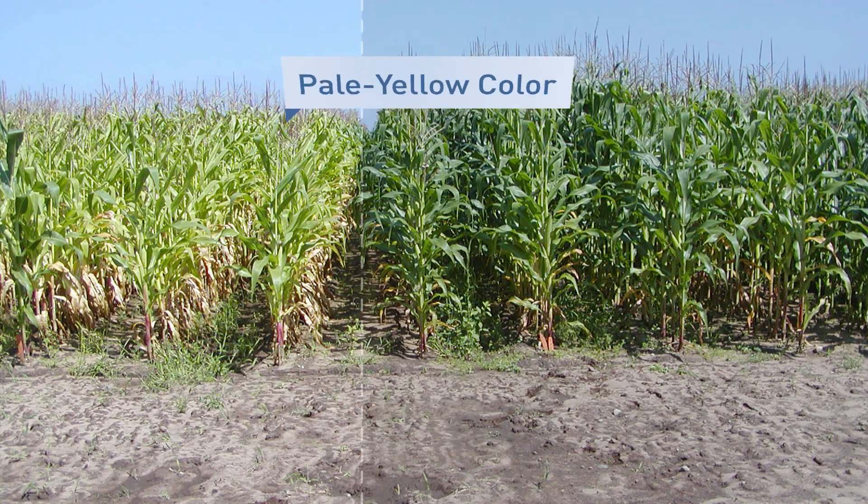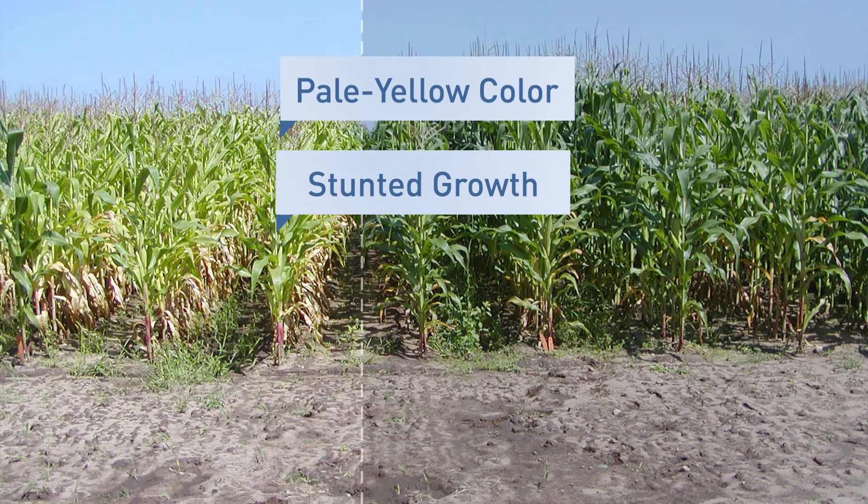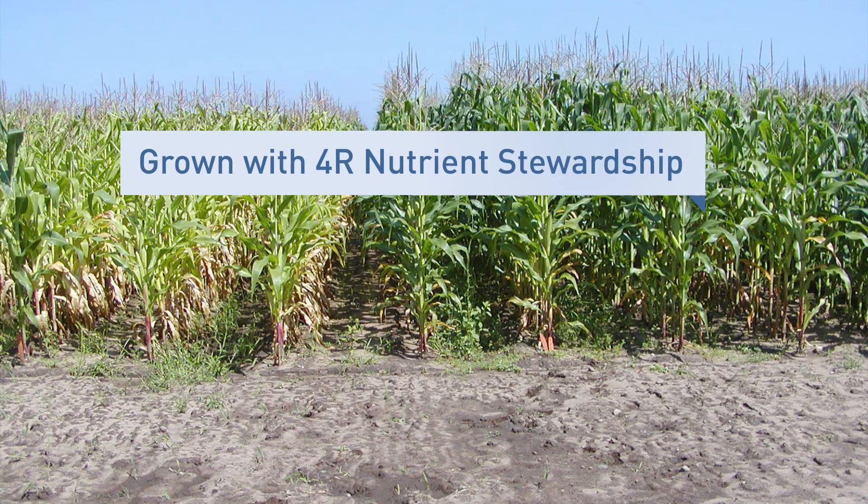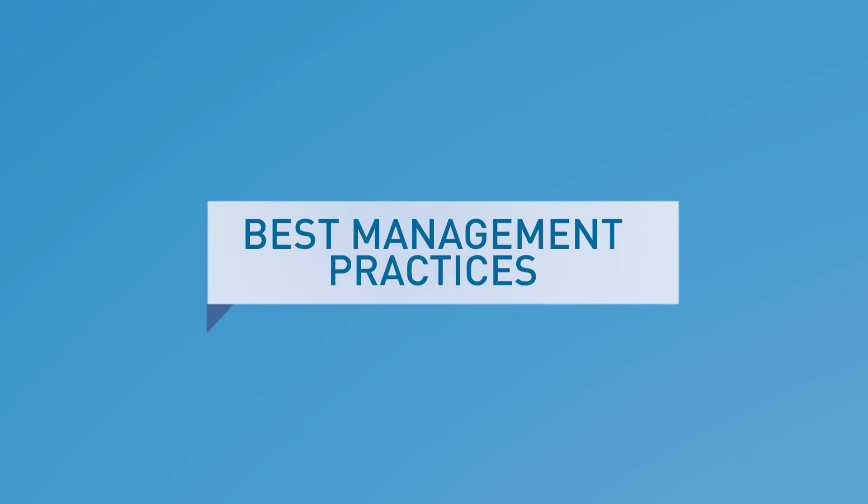Nutrient deficient plants show symptoms like turning pale yellow in color and have poor growth. They're less able to compete with weeds, resist plant diseases, insects, or drought. These plant health related problems may result in less food grown with lower nutritional value.